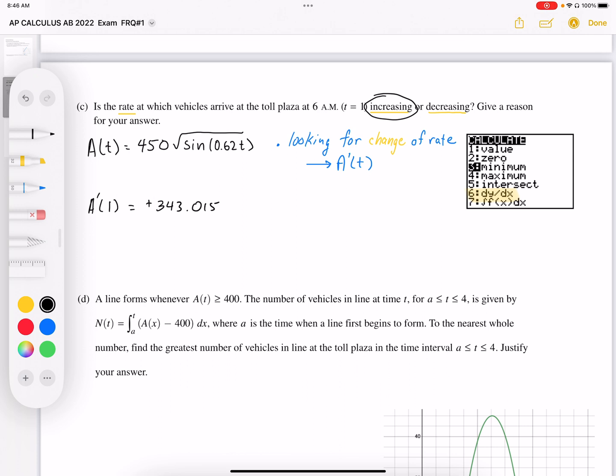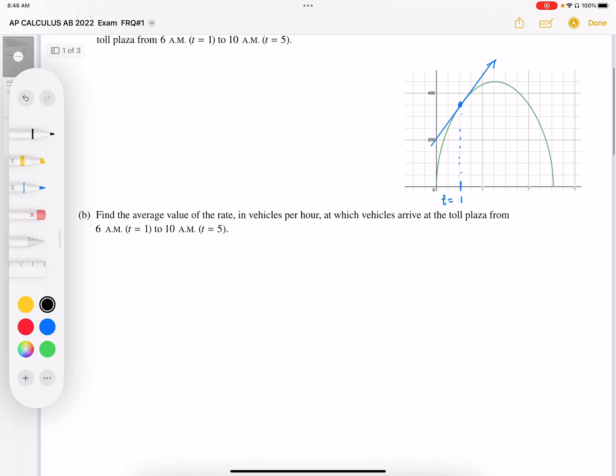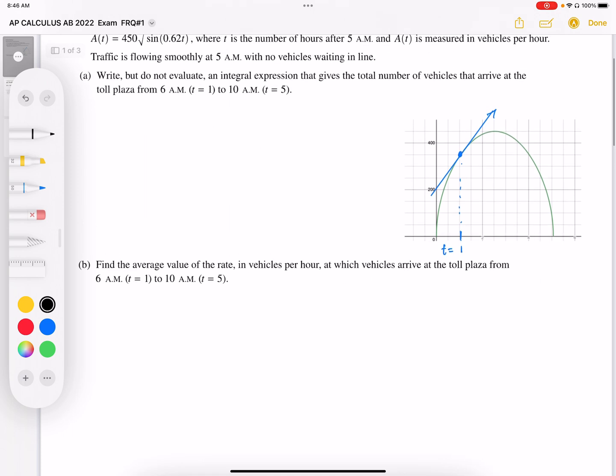Another way we can do this problem is we can just actually look at the graph. And we can see at t equals 1, the tangent line is sloping up.